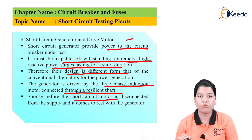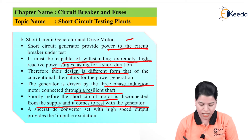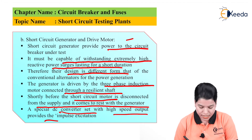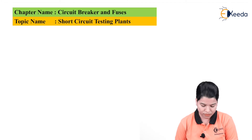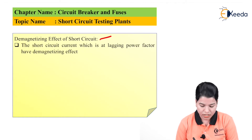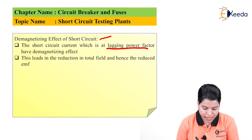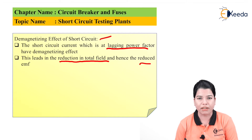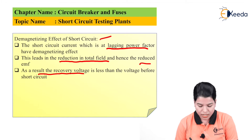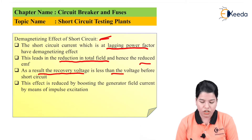Shortly before the short circuit, the motor is disconnected from the supply and comes to rest with the generator. A special DC converter set with high-speed output — called impulse excitation — is provided. The short circuit current at lagging power factor has a demagnetizing effect, reducing flux, the total field, and hence the EMF, so that the recovery voltage is less than the voltage before the short circuit. This demagnetizing effect is reduced by boosting the generator field current using impulse excitation.